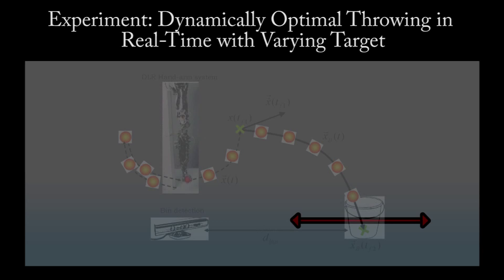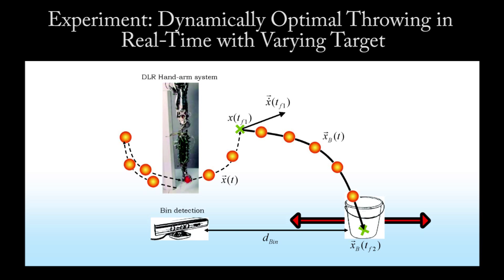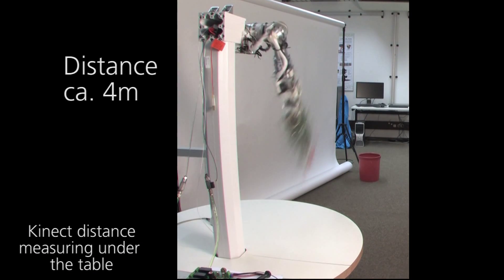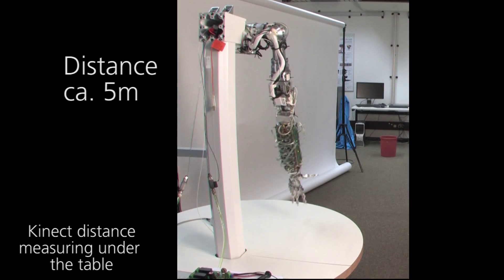This framework can for example be used to execute explosive motions such as throwing a ball. In the following experiment, the task is to throw a ball into a bin. The bin is tracked by a camera system and the dynamically optimal motions are generated in real time.